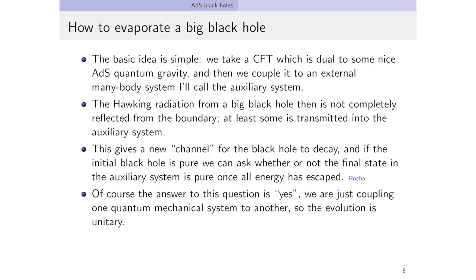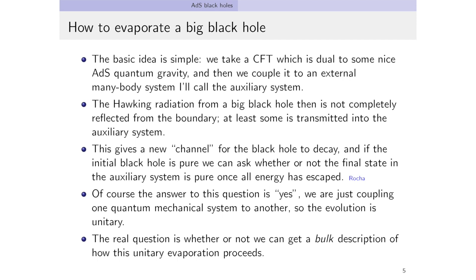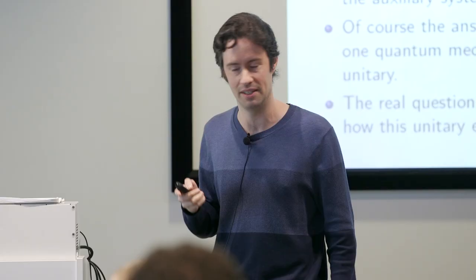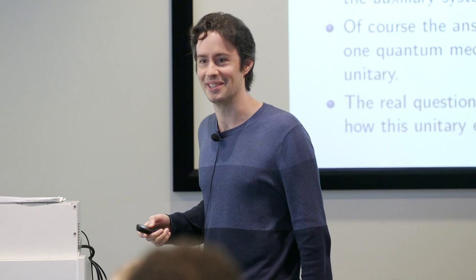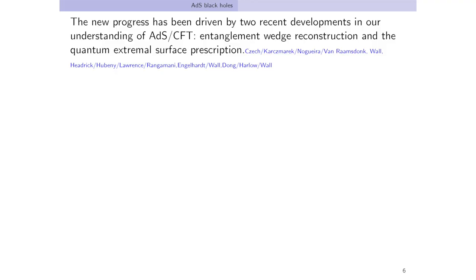Of course, we know the answer is that it's pure, because we're just taking one quantum mechanical system and coupling it to another. Since it started out in a pure state, it's going to end in a pure state. So that's not really the question. The real question is whether or not we can get a bulk description of how this unitary evaporation happened. That's what we're really after. The new progress is being driven by two recent developments in our understanding of ADS-CFT.